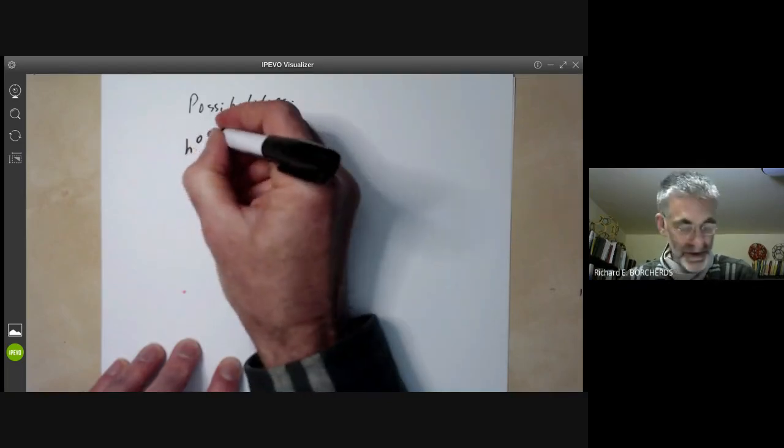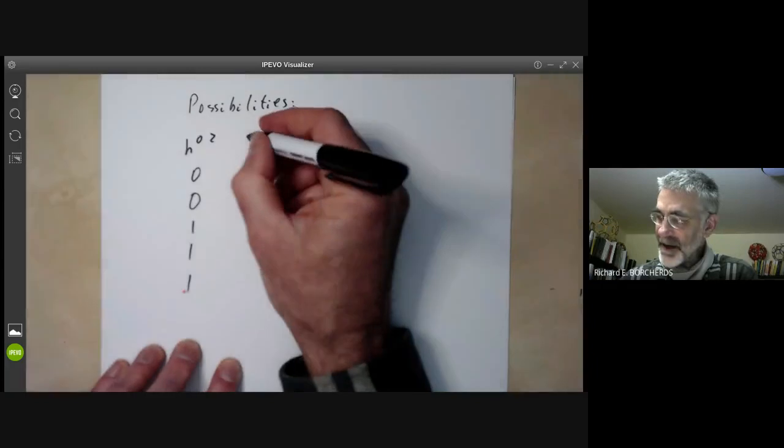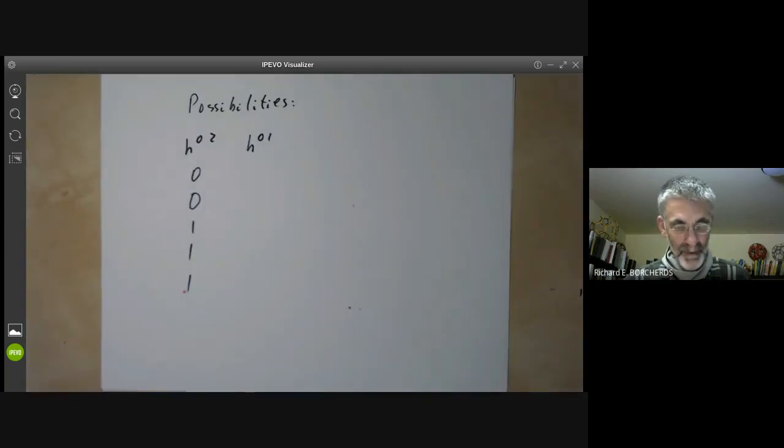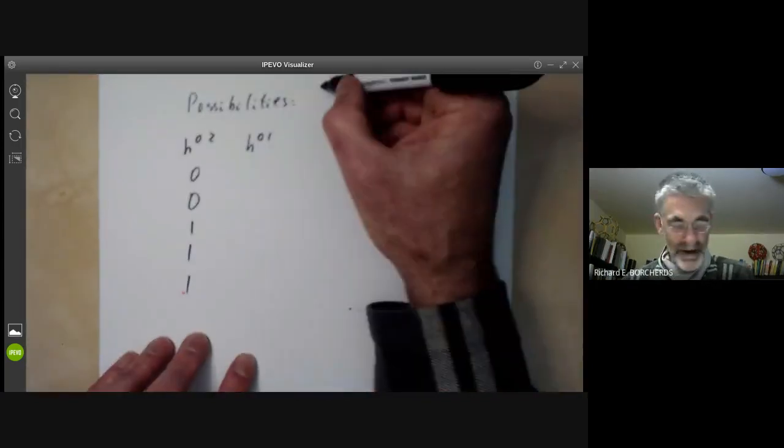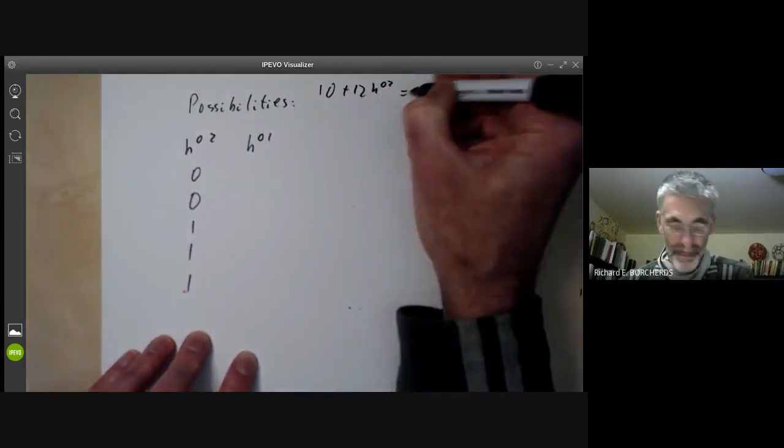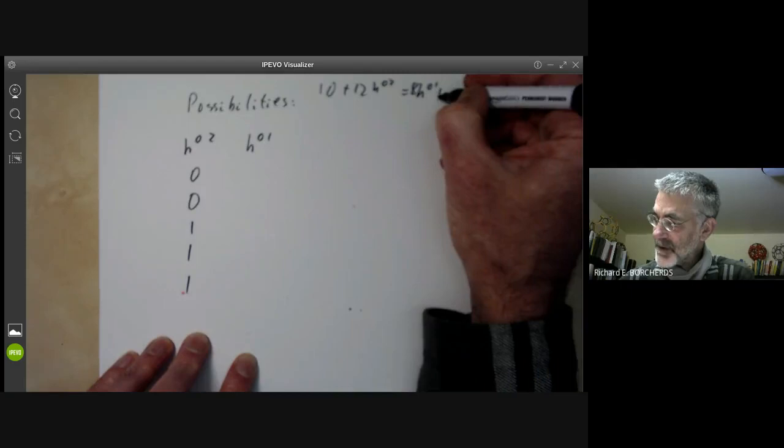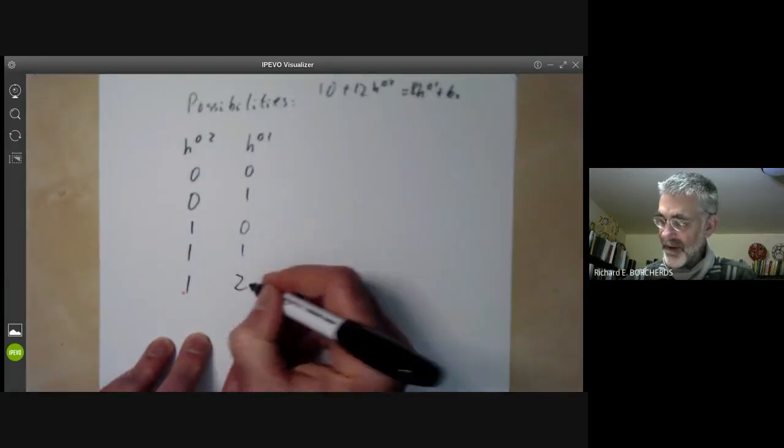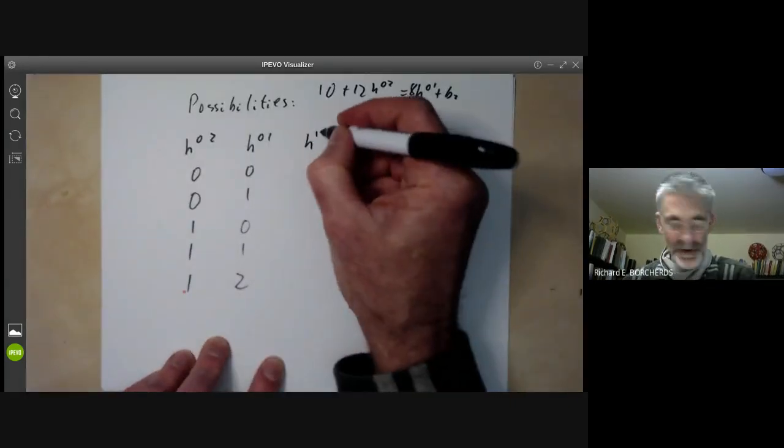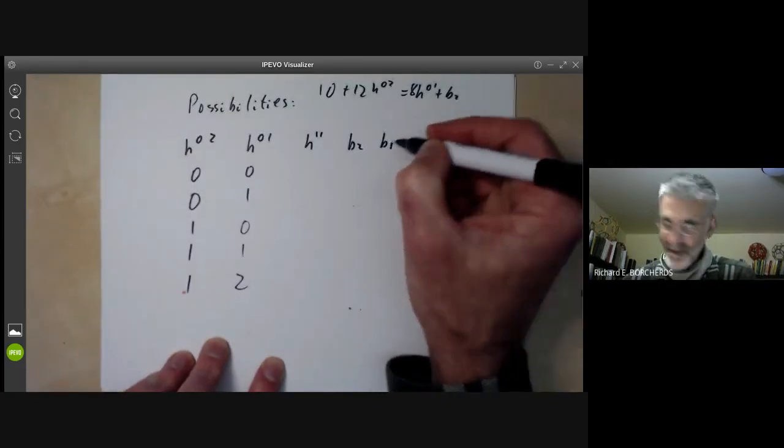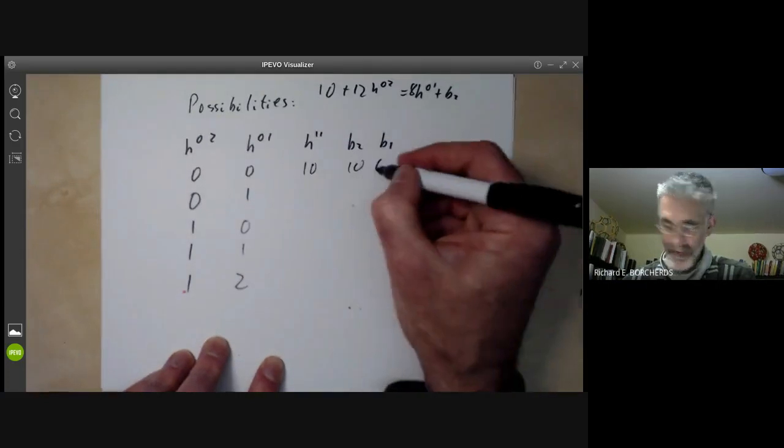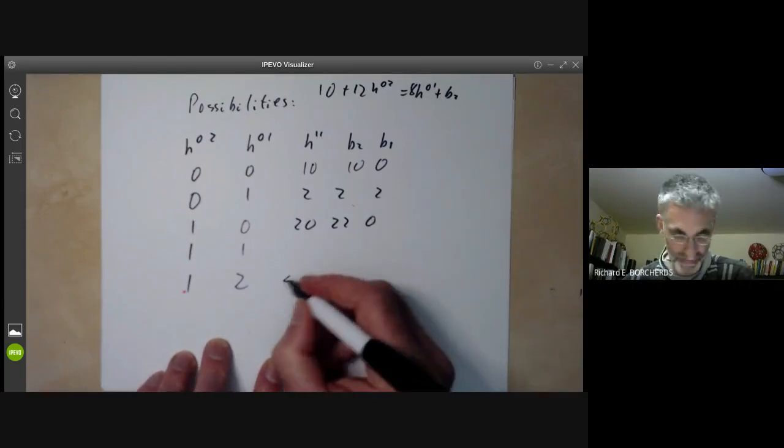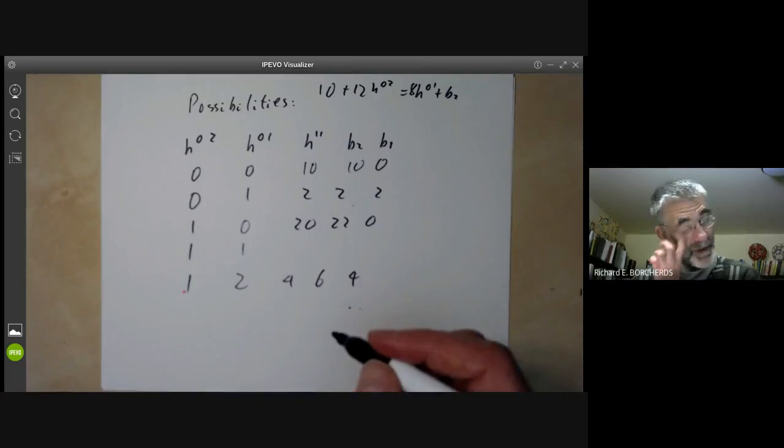You can quite easily write them out as follows. So H⁰² must be zero or one, and H⁰¹ must be, well, 8H⁰¹ must be at most 10 plus 12H⁰². The only possibilities we get are this. And from this, you can work out the other Hodge numbers and the remaining Betti numbers.